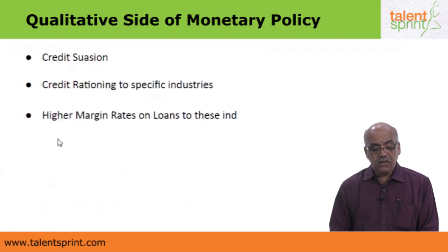RBI could also impose higher margins on lending to certain industries. There have been times when the Reserve Bank of India has said that you cannot lend to all industries with the same margin. Banks often lend to individuals against the pledge of company shares. Since share prices fluctuate, the bank will want a higher margin on these loans, meaning the banks want to secure their loans more effectively, and this securing is done by means of margins.